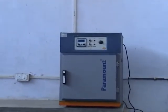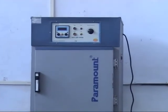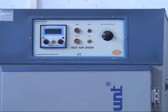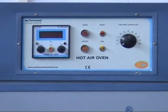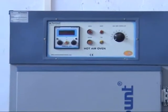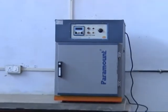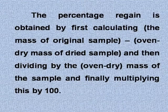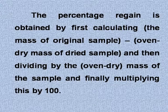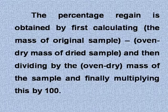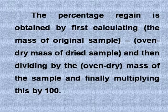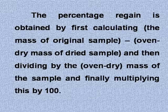After this, it is removed and cooled with the stopper replaced. This procedure is repeated until almost complete drying takes place, when the weight becomes almost constant. The percentage regain is obtained by first calculating the mass of the original sample minus the oven dry mass of the dried sample, then dividing by the oven dry mass of the sample, and finally multiplying by 100.